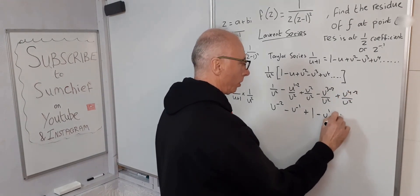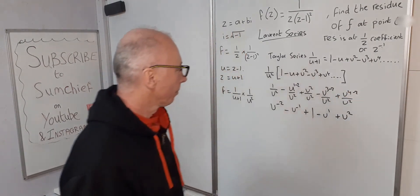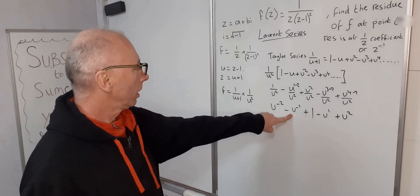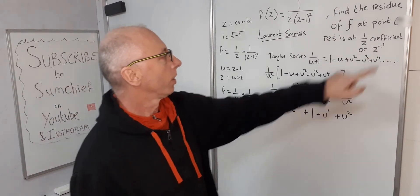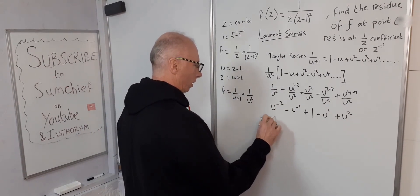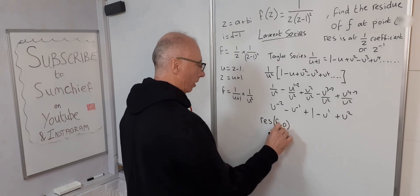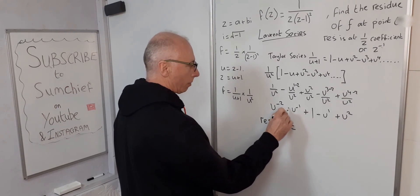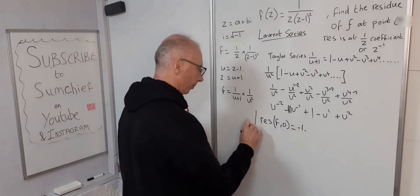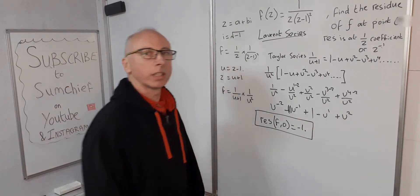So now we're looking for our residue here at u to the minus 1, which is there. So therefore the residue of f at 0 equals minus 1. That is our answer.